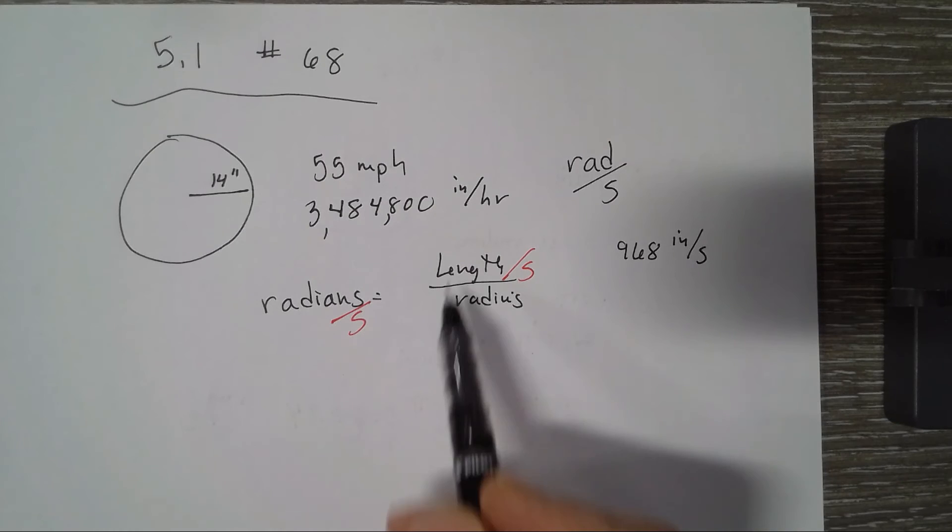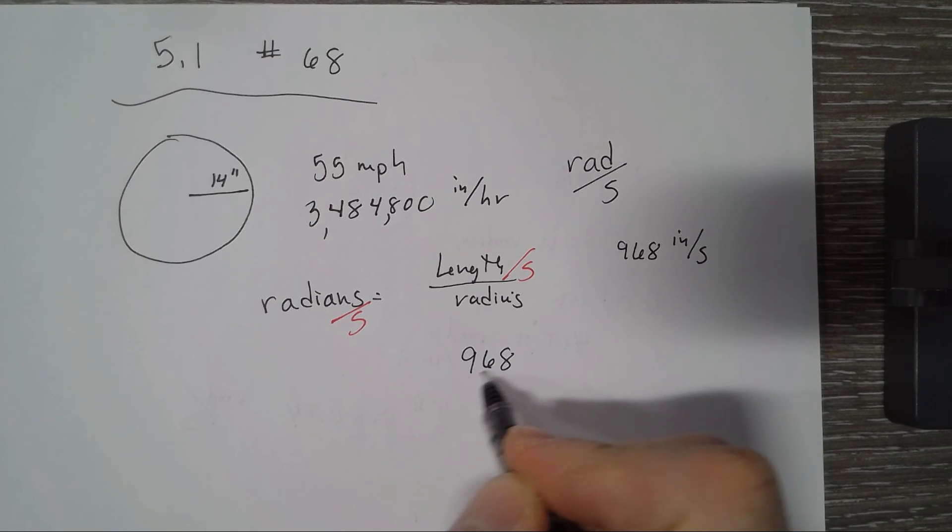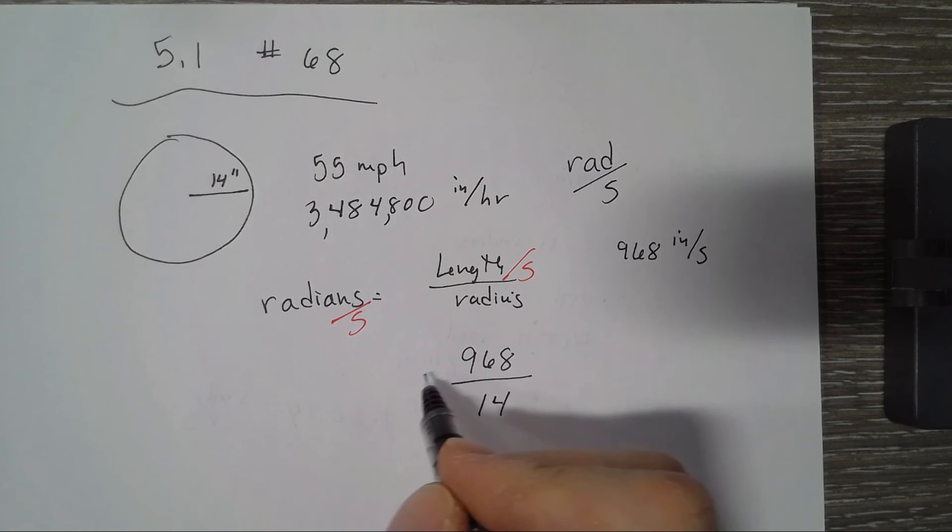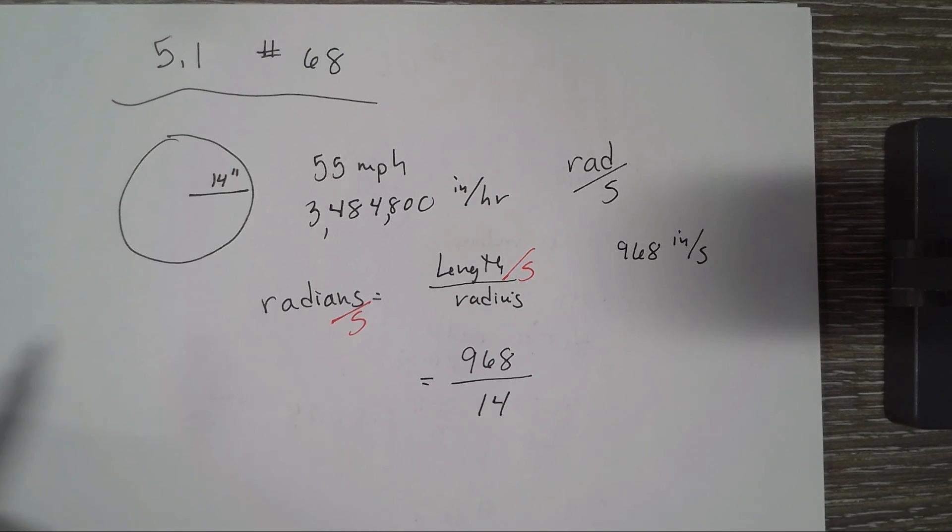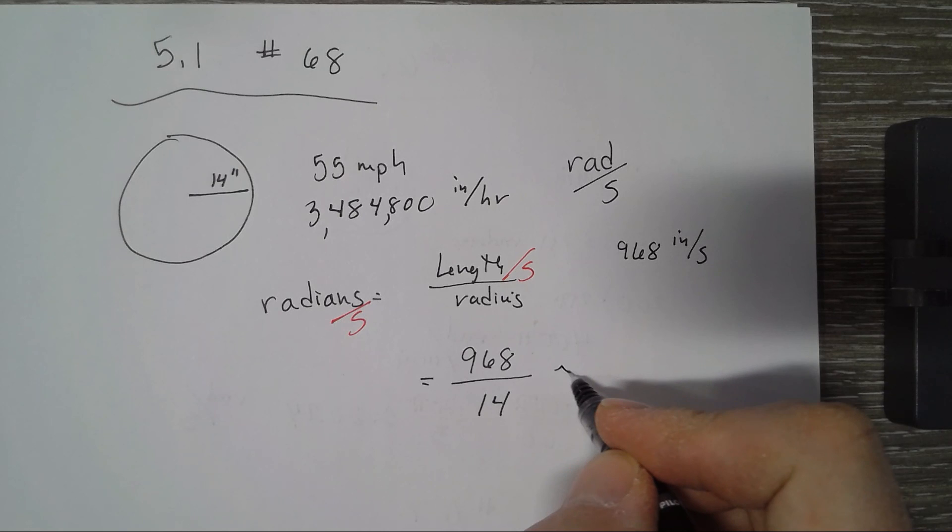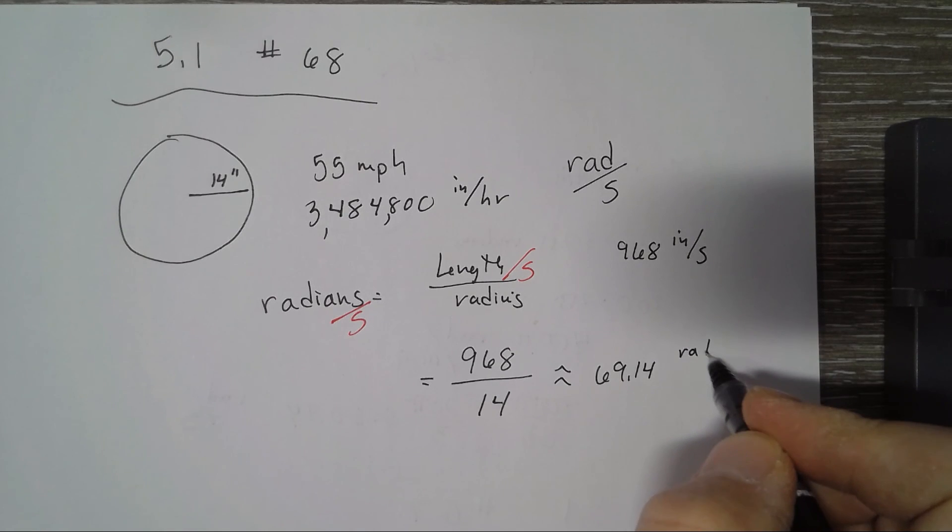That is our rate, our linear rate right here: 968. Our radius in inches is 14, and that will get us the radians per second. So divided by 14 gives us 484 over 7, or 69.14 radians per second.